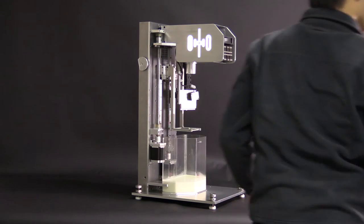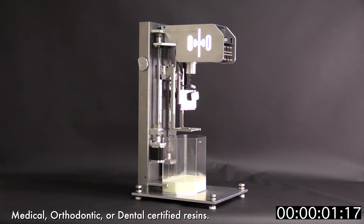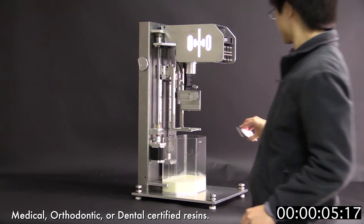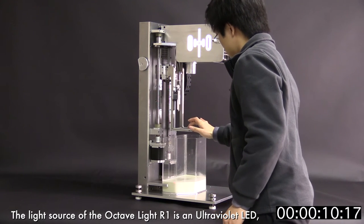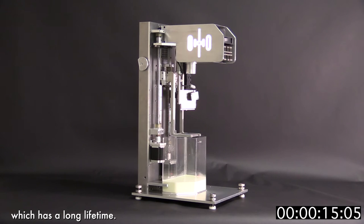The Octav Light R1 is compatible with most existing stereolithography 3D printing resins out there. You can print with your own medical, orthodontic, or dental certified resin. The light source of the Octav Light R1 is an ultraviolet LED, which has a long lifetime.